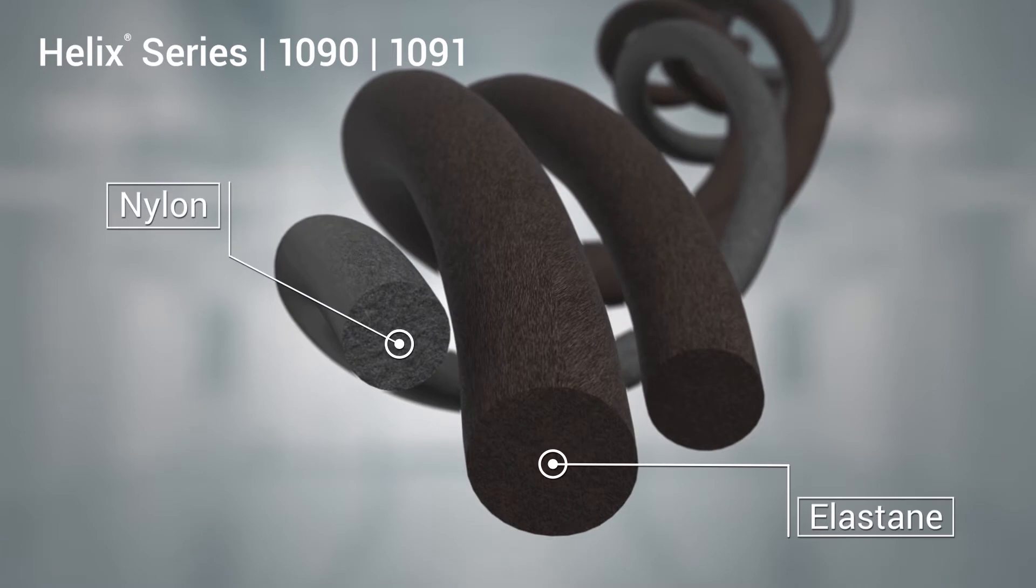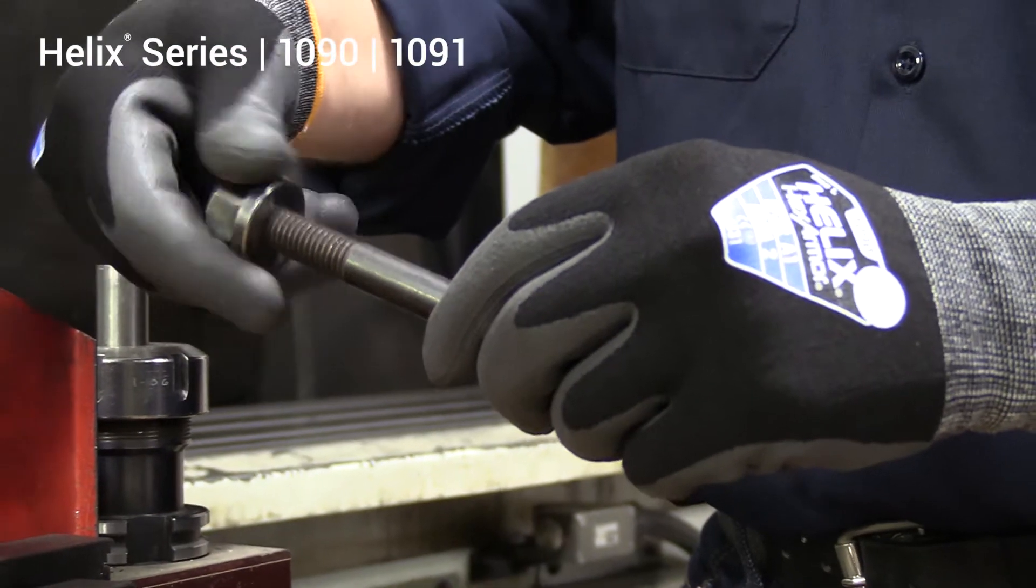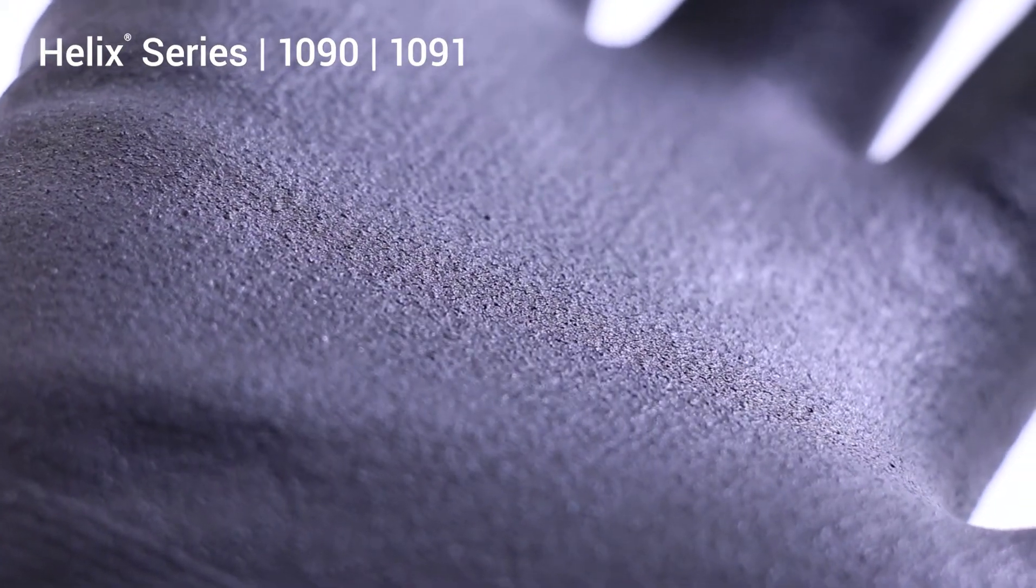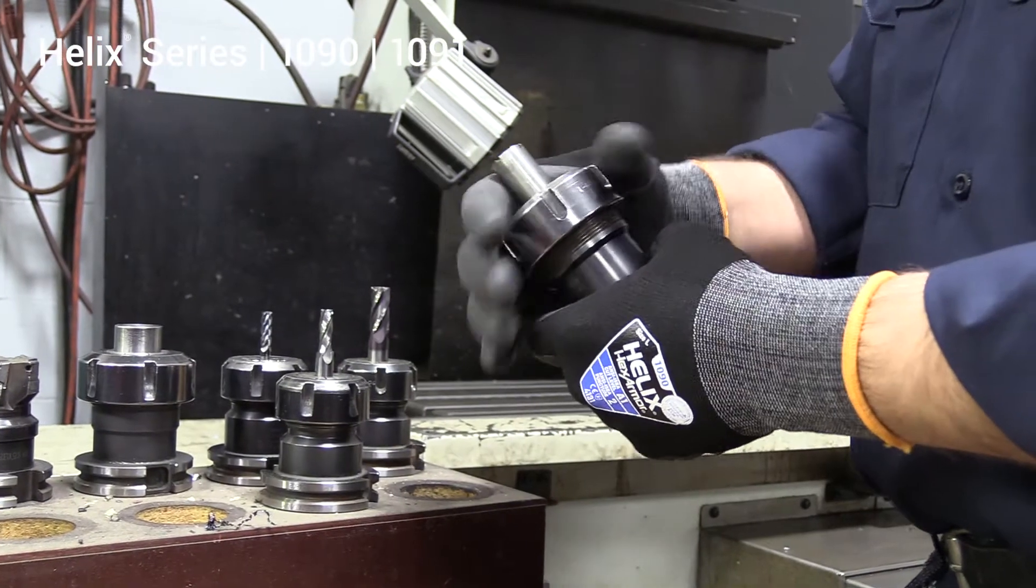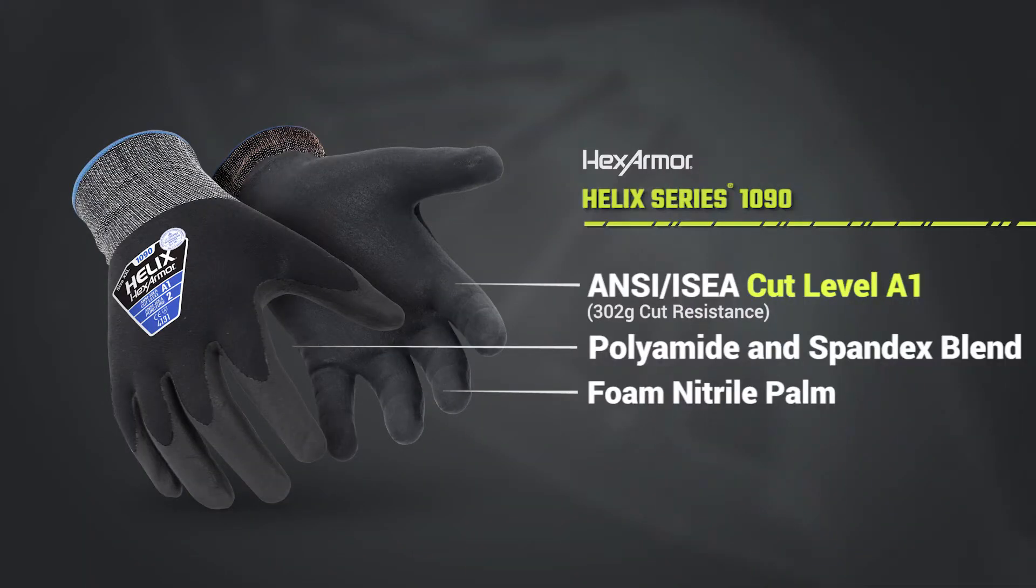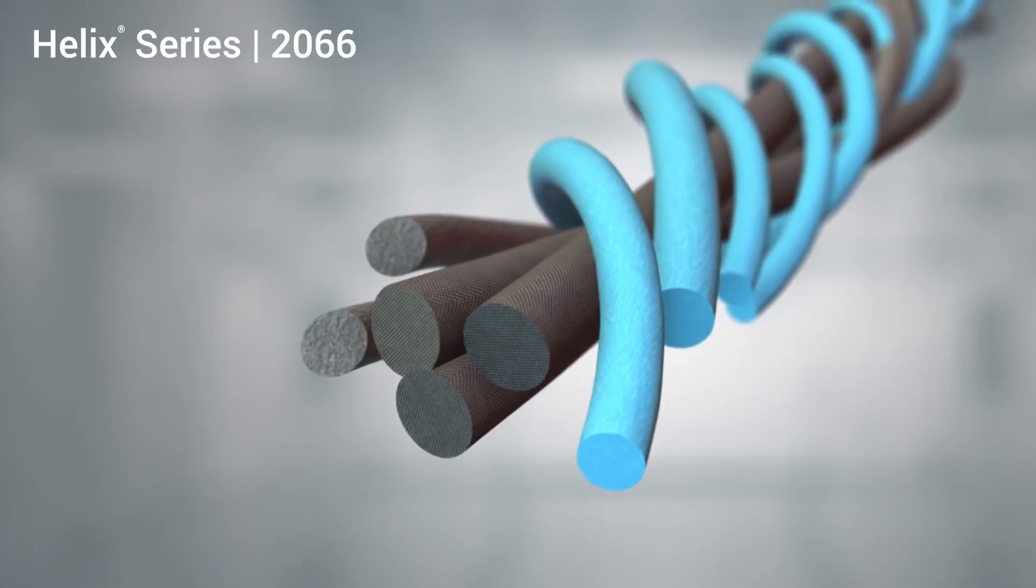1091 gives your gloves a second-skin feel with high flexibility and touch sensitivity while providing a high level of abrasion resistance. Slip it on and feel the vanishing fit instantaneously. Dyneema Diamond offers the incredible cut resistance of fiberglass